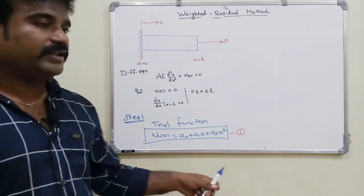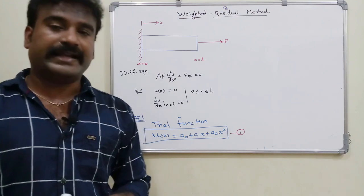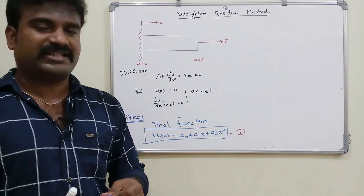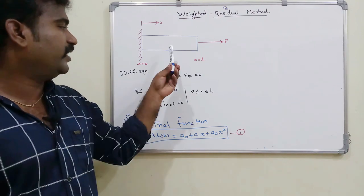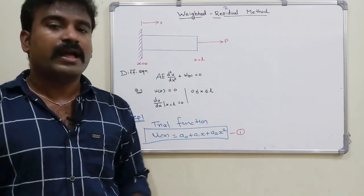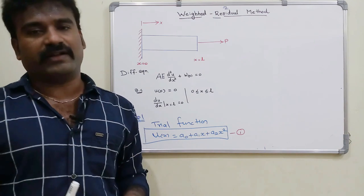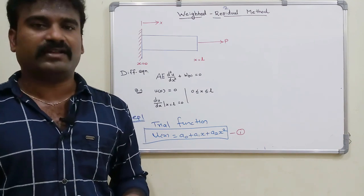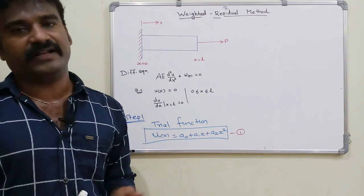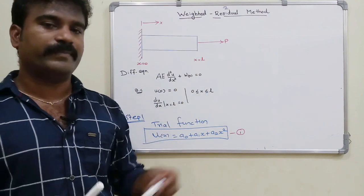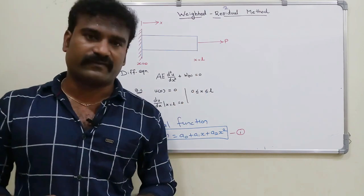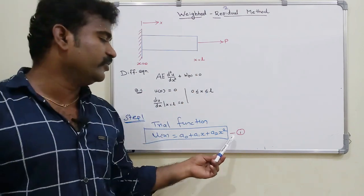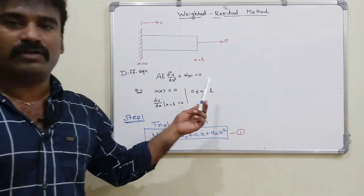This is a quadratic polynomial function that can be used over the full domain. For a beam, you can use a Fourier series — for a fourth-order differential equation d⁴y/dx⁴, you would use the appropriate series solution.